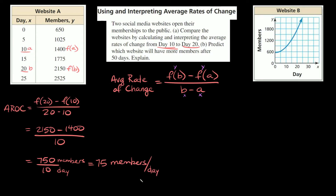That's the average rate of change for website A. This means that from day 10 to day 20, the website is growing 75 members per day.